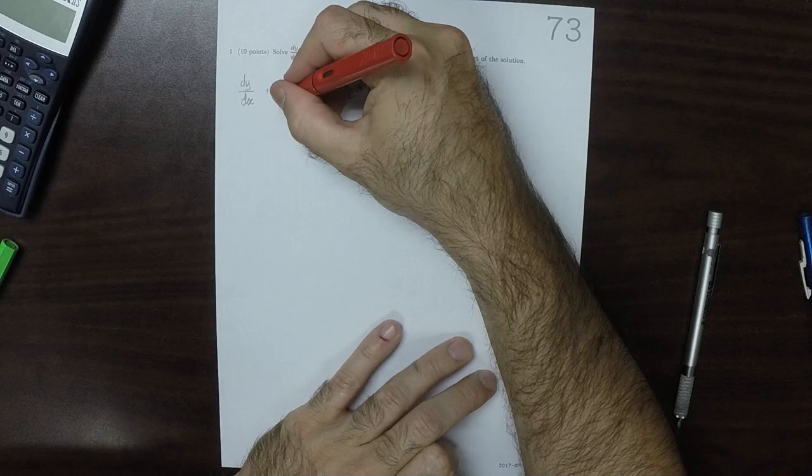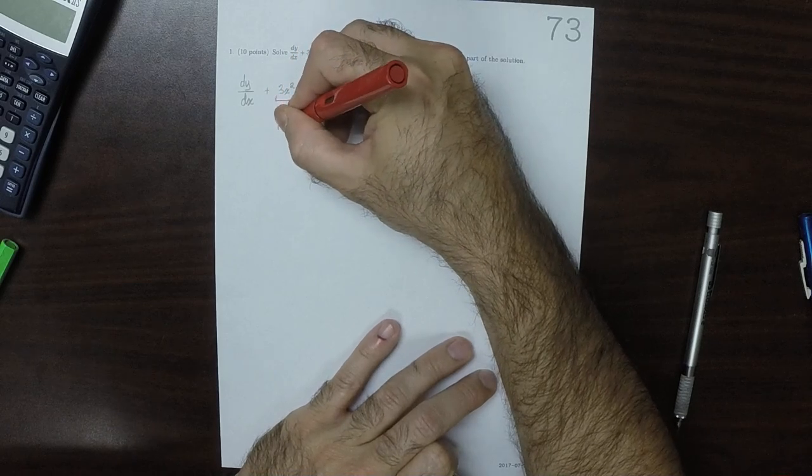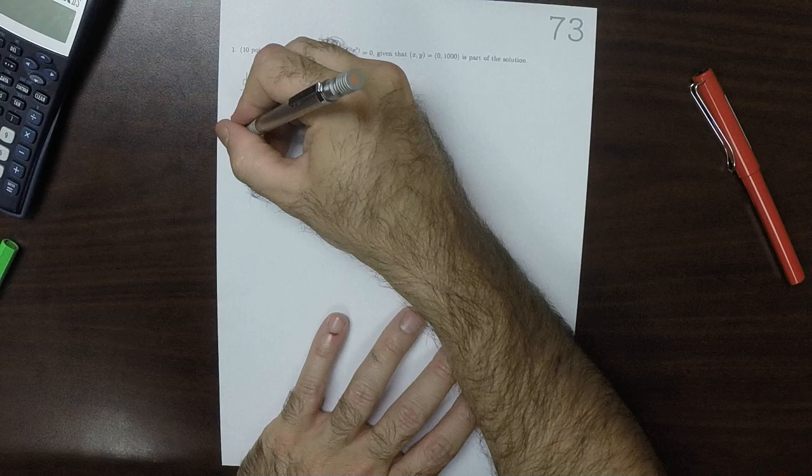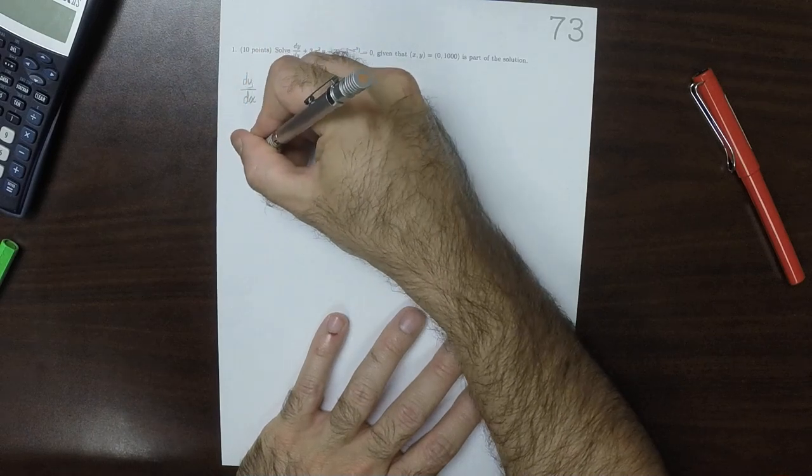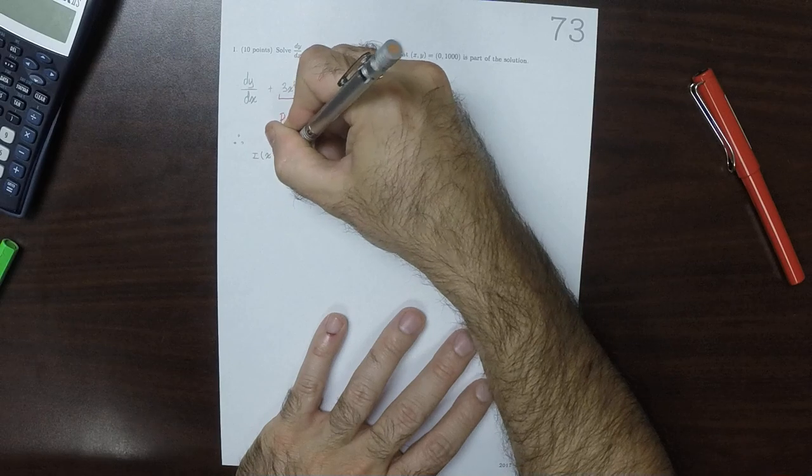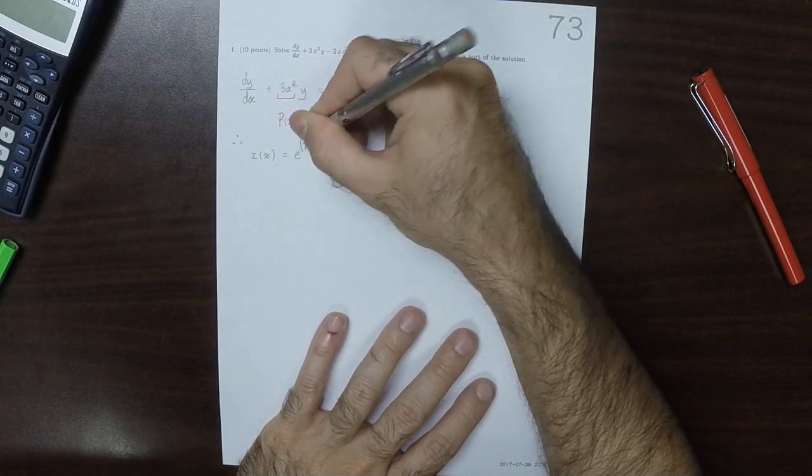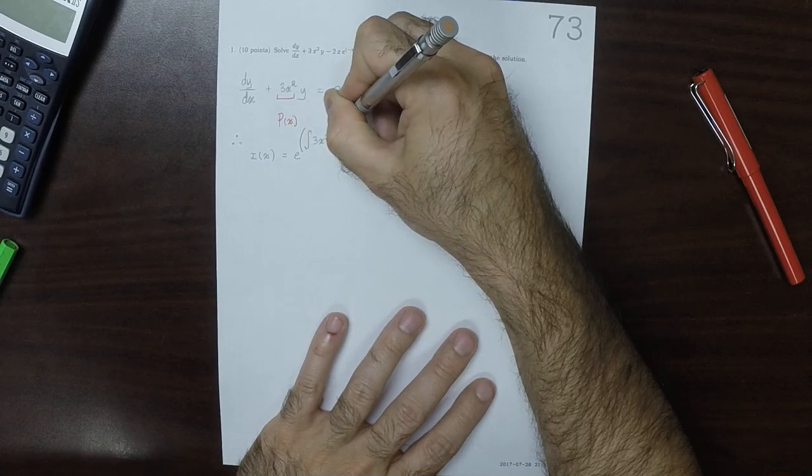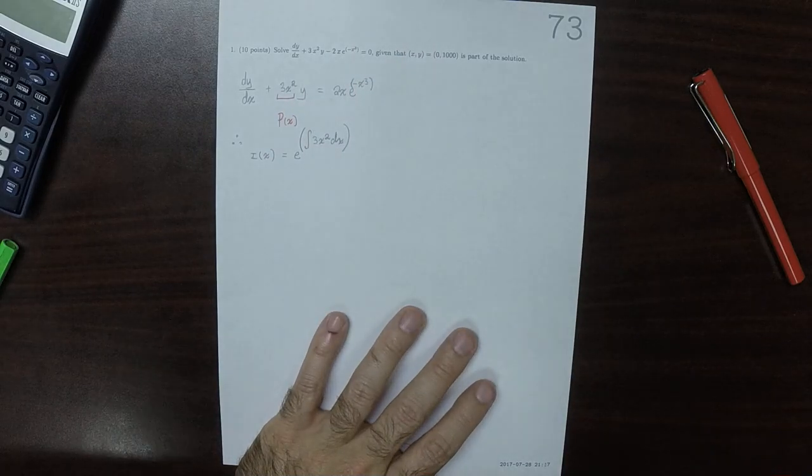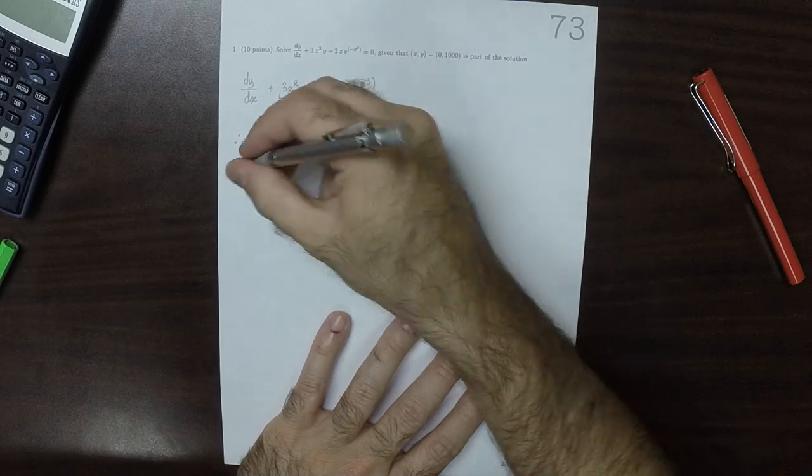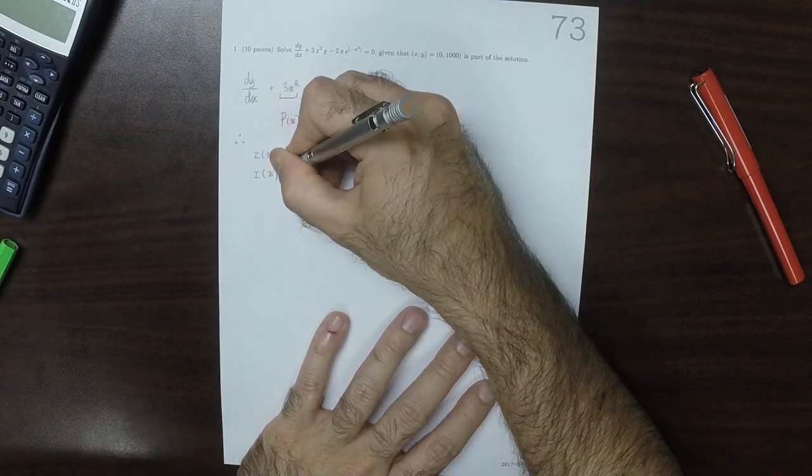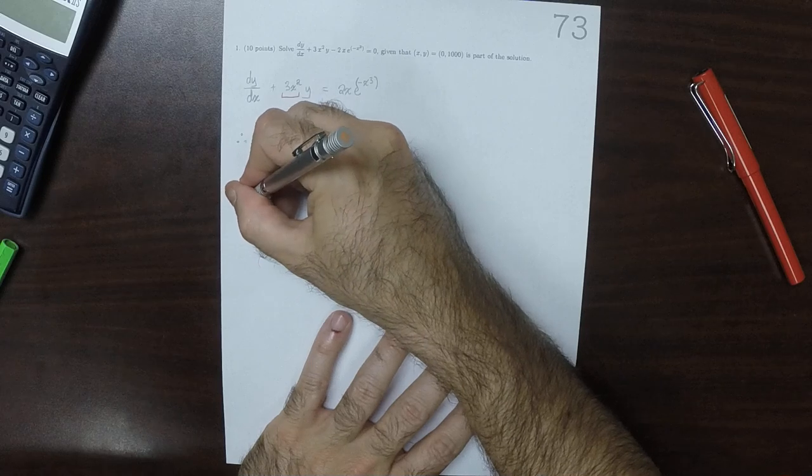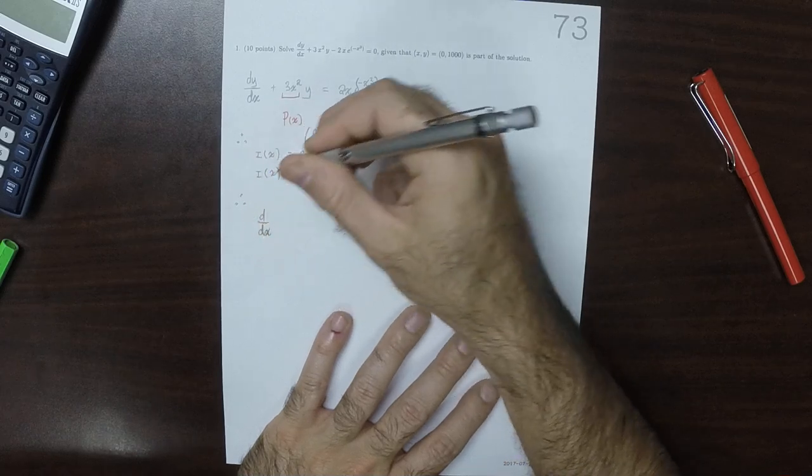This right here, that's P of X. This term on the right hand side is Q of X. The integrating factor I of X is the exponential of the antiderivative of 3x squared dx. Well, the antiderivative of that is x cubed, so the integrating factor is the exponential of x cubed.